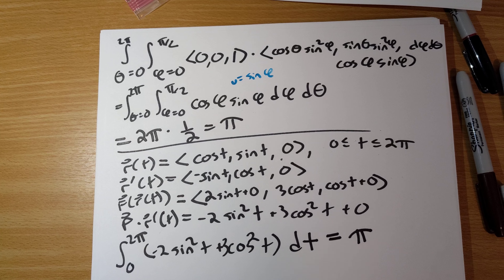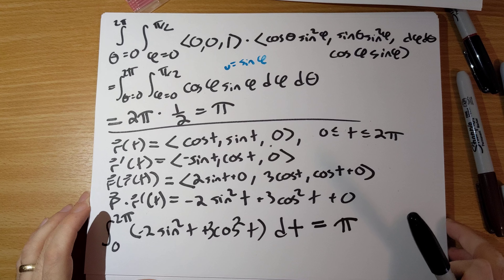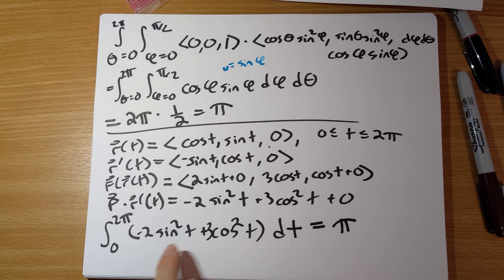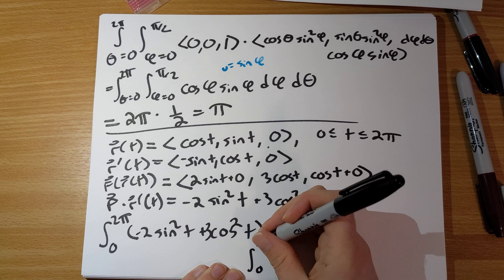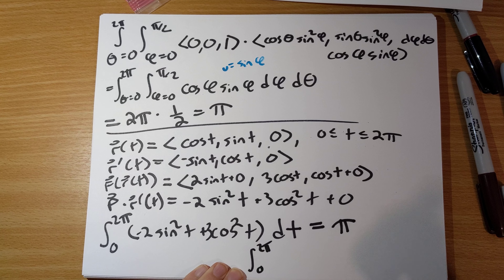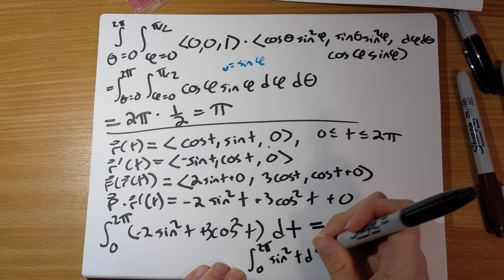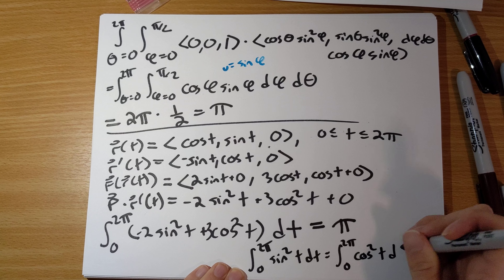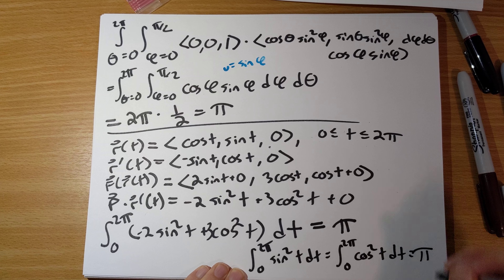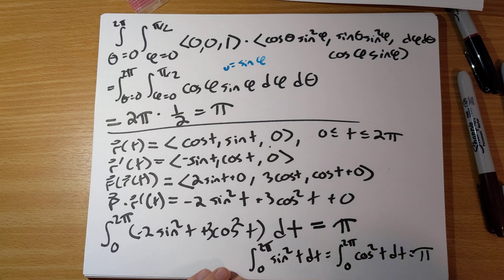Applying trigonometric identities and using the fact that ∫₀²π sin²t dt = ∫₀²π cos²t dt = π, the integral evaluates to −2π + 3π = π. Both sides equal π, verifying Stokes' theorem. That completes the first half of problem five; the other half is left as a genuine exercise.